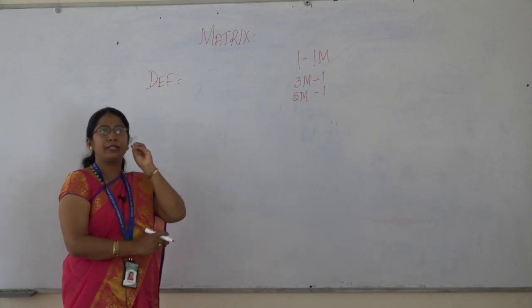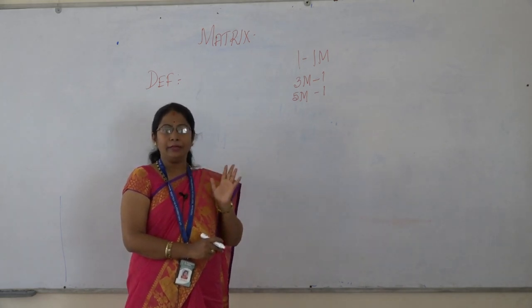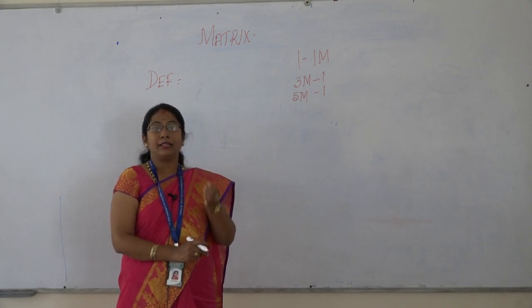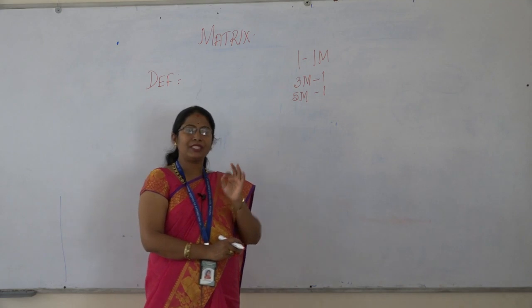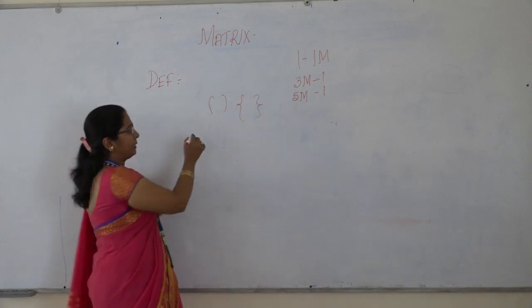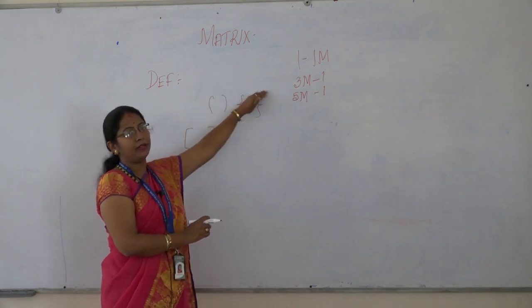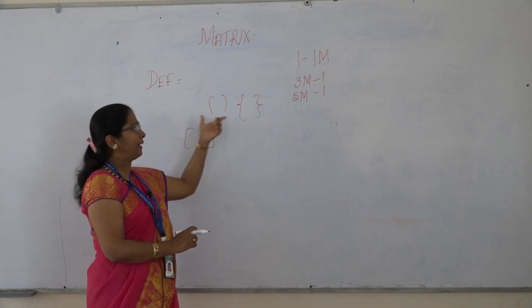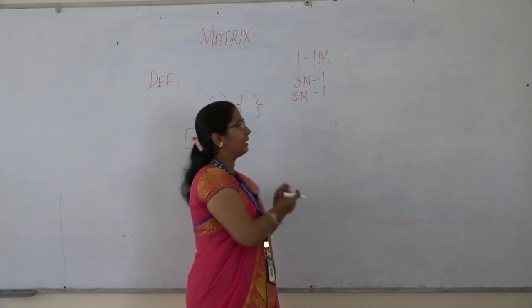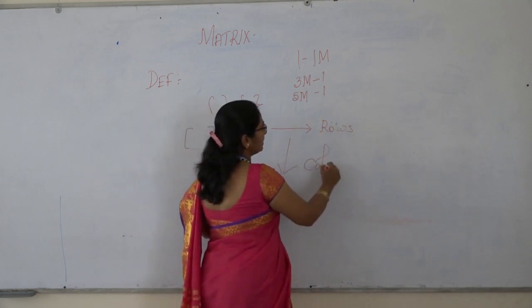What is the definition of a matrix? An arrangement of numbers — it may be a real number or a complex number — arranged in the form of rows and columns, enclosed within a pair of brackets, is known as a matrix. The pair of brackets may be braces or square brackets. Rows are the horizontal lines of numbers, and columns are the vertical lines of numbers.